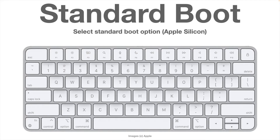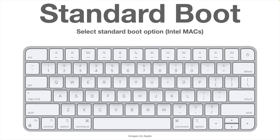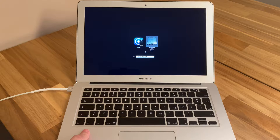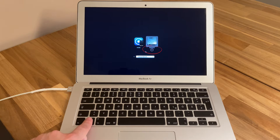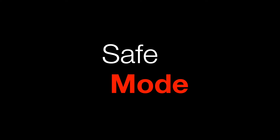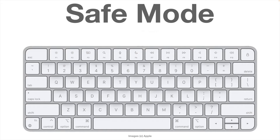On the boot selector screen, you can also set the standard boot option so your Mac always boots from a specific partition if you don't select anything else. For Apple Silicon, keep the Option key pressed; for Intel Macs, keep the Control key pressed. You'll see a small upward arrow below the selected icon change into a circular arrow — keep the key pressed and select that option to set it as the default boot.